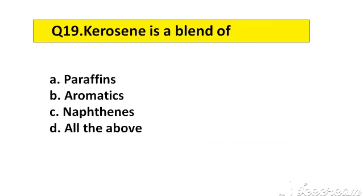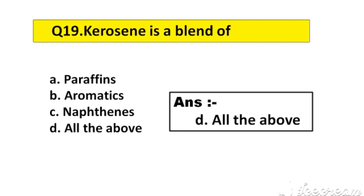Question number 19. Kerosene is a blend of option A: Paraffins, B: Aromatics, C: Naphthalene, D: All the above. The right answer is option D: All the above.